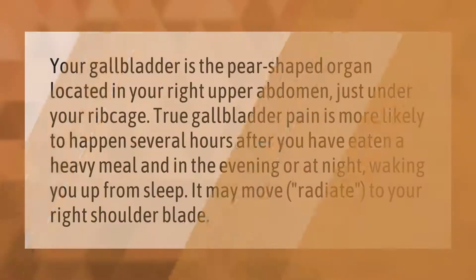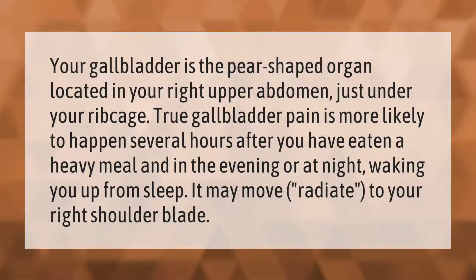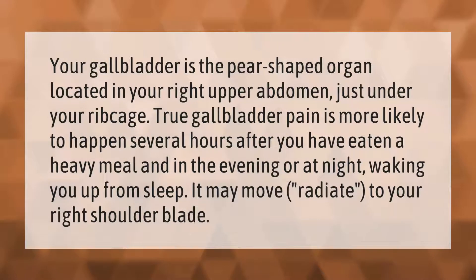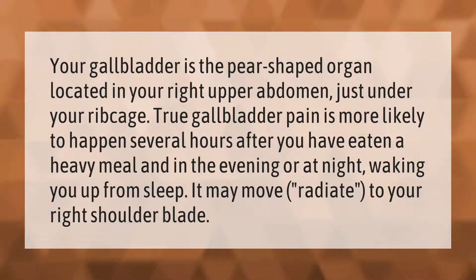Your gallbladder is the pear-shaped organ located in your right upper abdomen, just under your rib cage. True gallbladder pain is more likely to happen several hours after you have eaten a heavy meal and in the evening or at night, waking you up from sleep. It may move and radiate to your right shoulder blade.